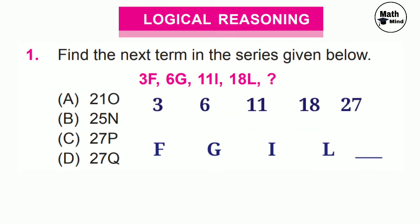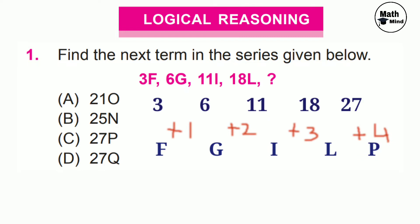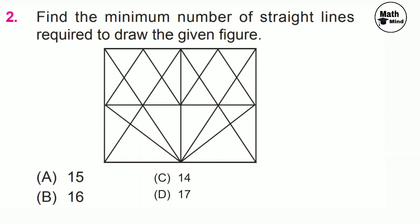Now for the letters, following the English alphabetical order: F plus 1 is G, G plus 2 is I, I plus 3 is L. The added numbers are 1, 2, 3, so the next number will be 4. L plus 4 gives P. So option C is correct, D is cancelled. Question number 2: find the minimum number of straight lines required to draw the given figure.